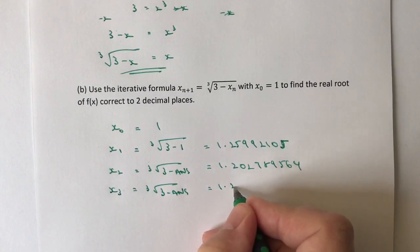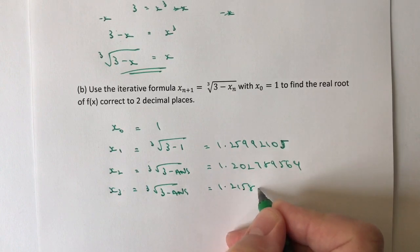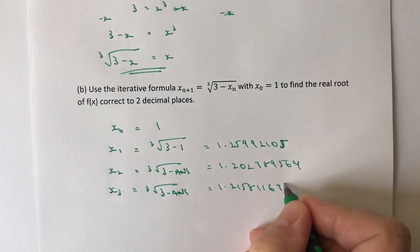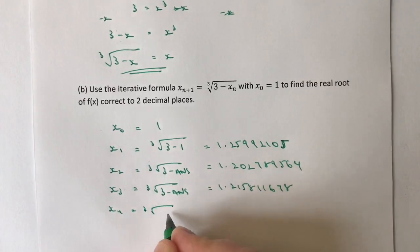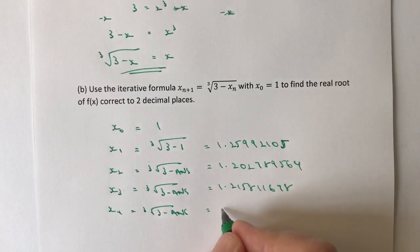This answer is going to go in now. For x₃, I'm going to get 1.215811678. It's a little bit tedious to do this sort of question—it's a bit like trial and error.